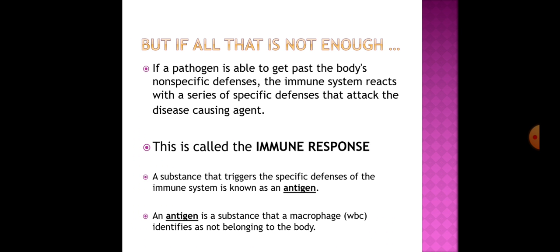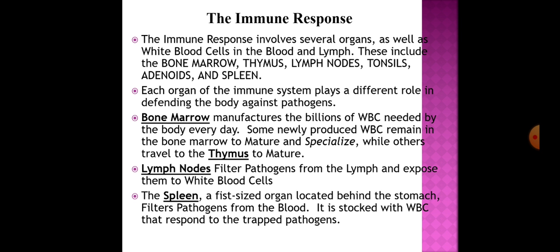If a pathogen is able to get past the body's non-specific defenses, the immune system reacts with a series of specific defenses that attack the disease-causing agent — this is called the immune response. A substance that triggers the specific defenses of the immune system is known as an antigen, which is a substance that a macrophage or white blood cell identifies as not belonging to the body. The immune response involves several organs as well as white blood cells in the blood and lymph.